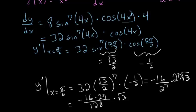And 16 divided by 128 simplifies to 1 divided by 8. So we have minus 27 times the square root of 3 over 8, and this is our final answer.